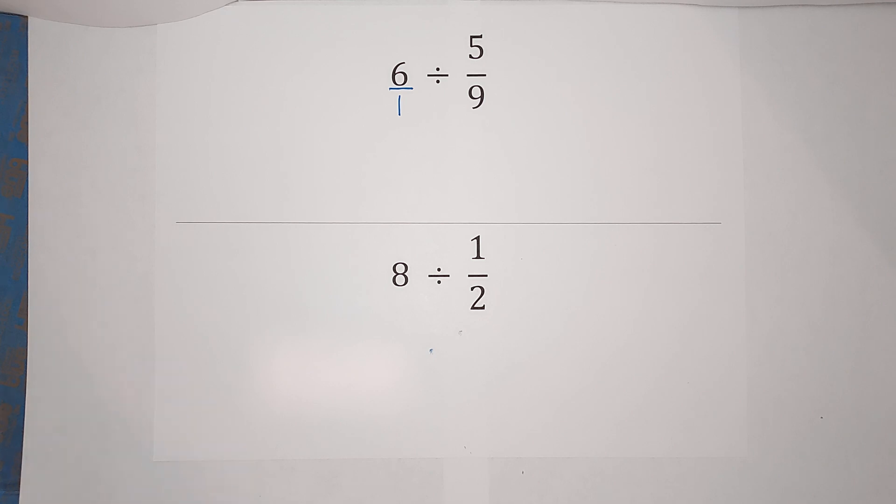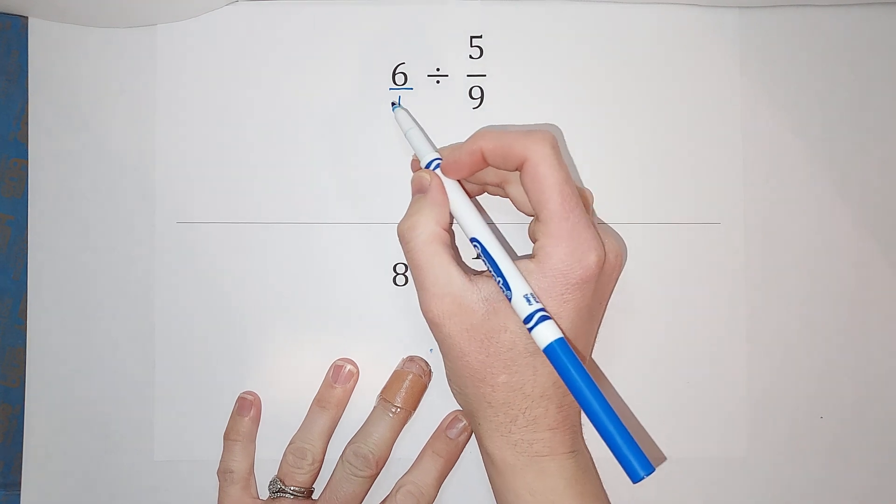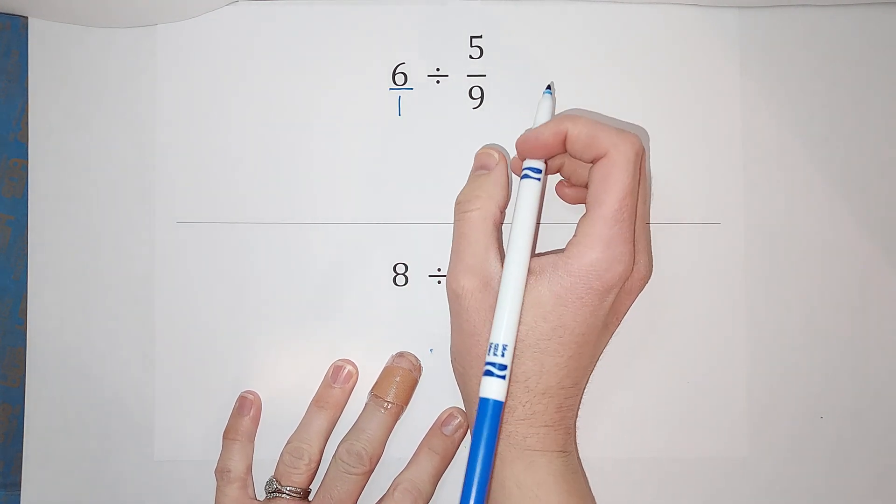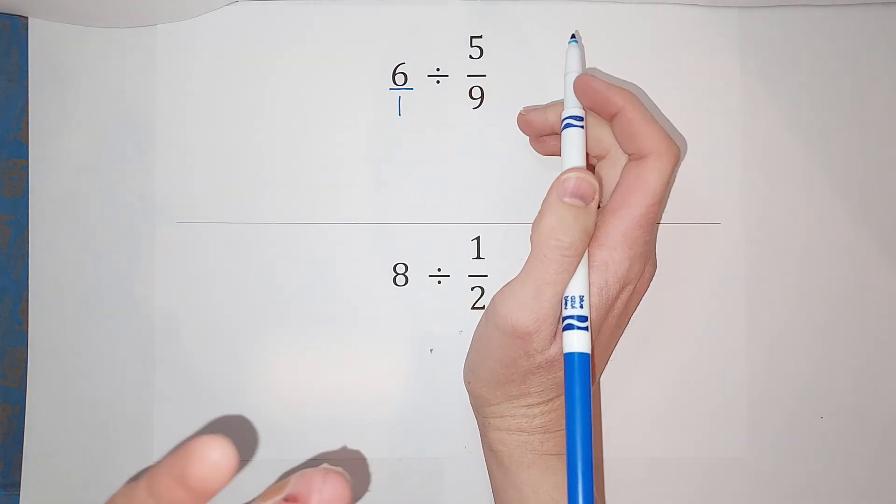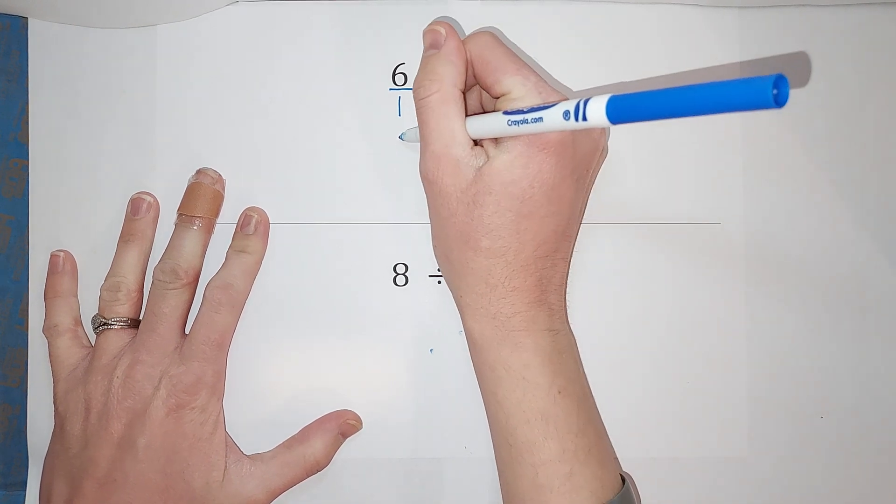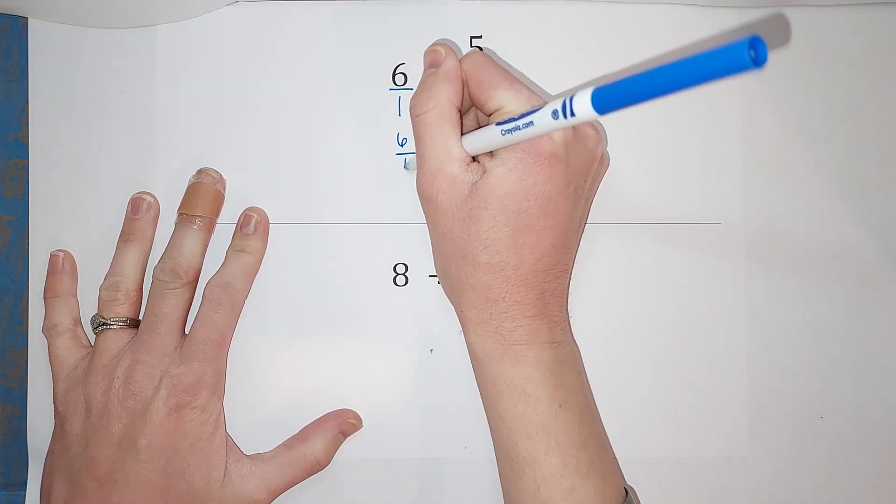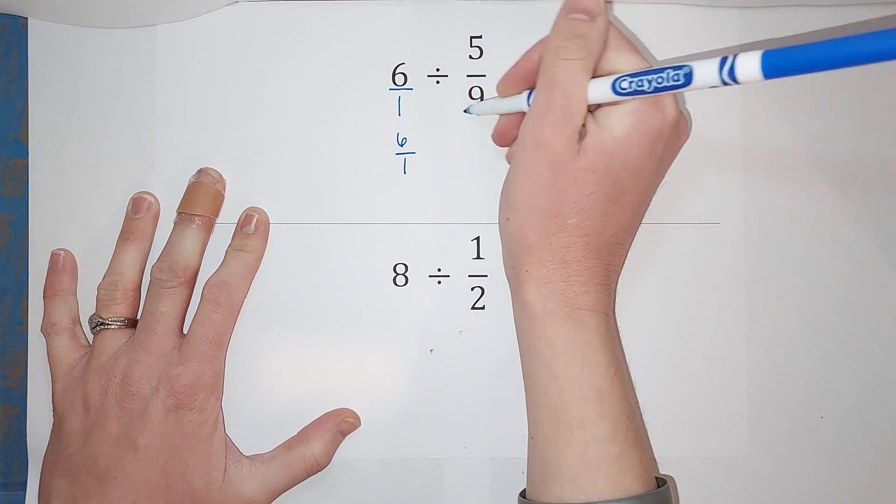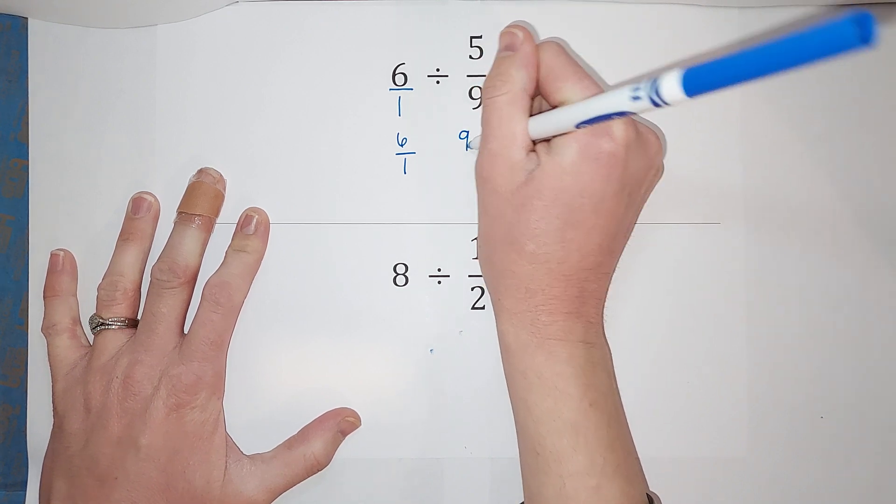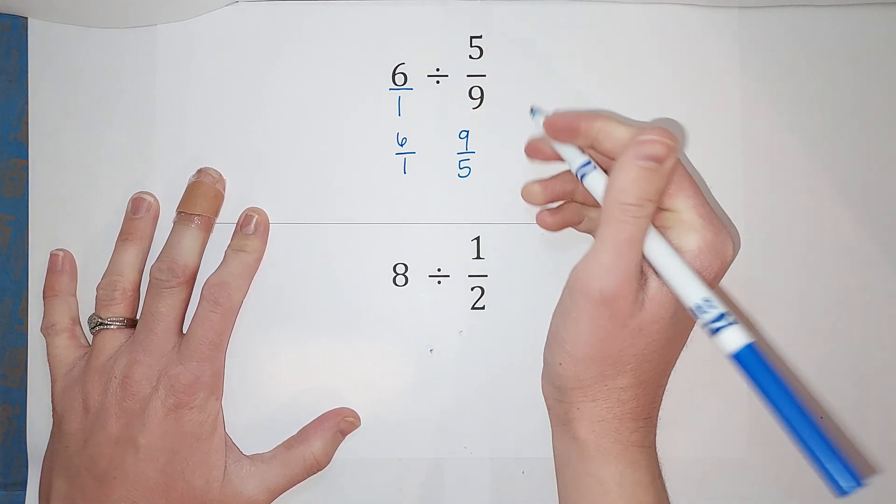So now we're just going to divide fractions like normal. What do we do when we divide fractions? We take our first fraction, we flip our second fraction—we do the reciprocal, is that fancy word—and then instead of dividing, we multiply.